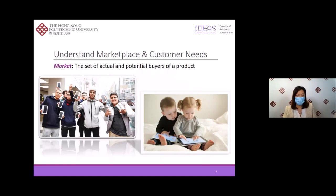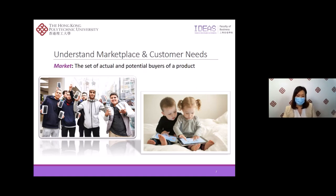As a first step, marketers need to understand customer needs and wants and the marketplace within which they are operating. We will take a look at core customer and marketplace concepts, starting from markets. Markets is defined as the set of actual and potential buyers of a product. These buyers share a particular need or want that can be satisfied by buying or using a product. So what is the market of Apple? Who are the customers of Apple? Obviously it's hard to narrow down — it's everyone regardless of occupation, age, gender, geographical areas, and also social classes.